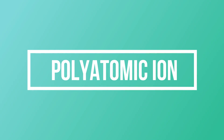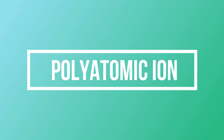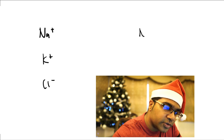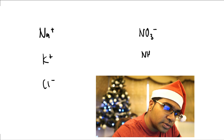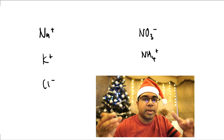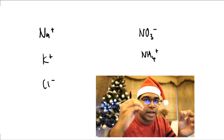And then we have the polyatomic ions. Polyatomic ions are ions that are made from more than one atom, such as nitrate and ammonium ions. These are polyatomic — they are made from many atoms. Poly means many.